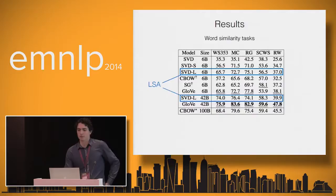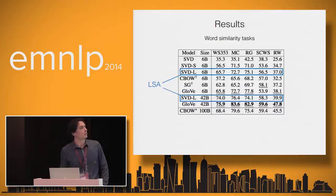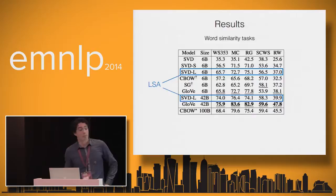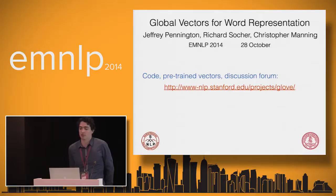More impressive is how well LSA actually does on word similarity evaluation metrics. We evaluate on four different datasets including WordSim-353. LSA does very well — not quite as well as GloVe, but actually better than word2vec. The code and pre-trained word vectors, as well as the discussion forum, are available at our website. Thank you all for listening.